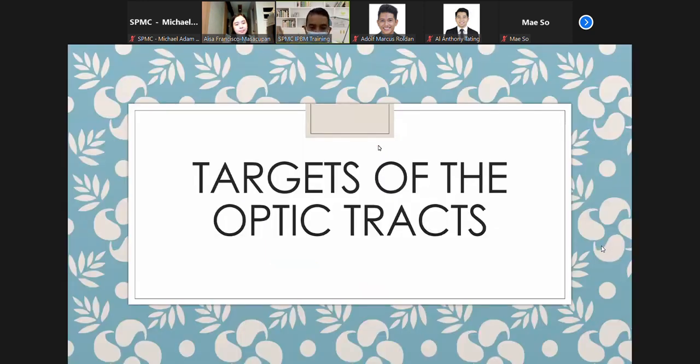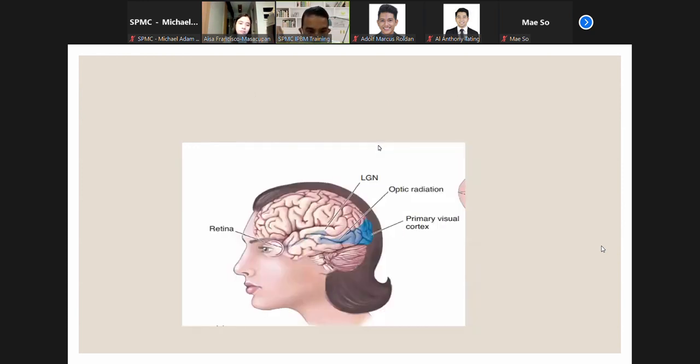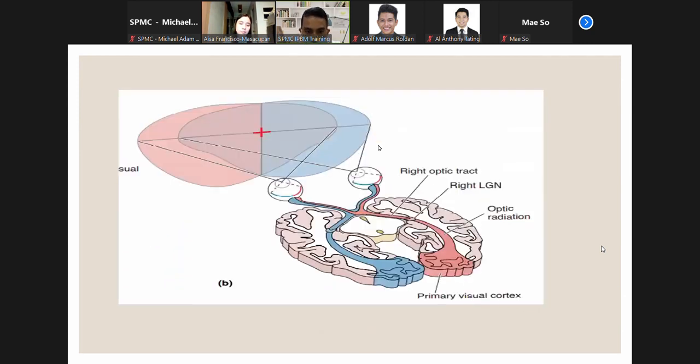Now let's proceed with the targets of the optic tracts. A small number of optic tract axons peel off to form synaptic connections with cells in the hypothalamus, while 10% innervate the midbrain, and most of them innervate the lateral geniculate nucleus of the dorsal thalamus or the LGN. The neurons in the LGN give rise to axons that project to the primary visual cortex. This projection from the LGN to the cortex is called optic radiation.